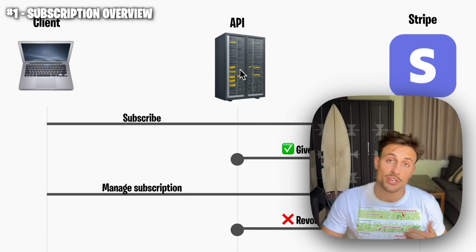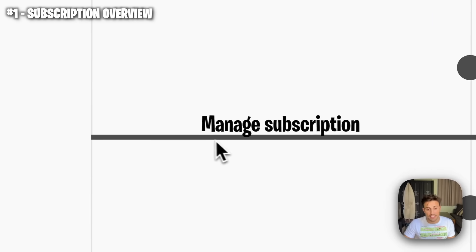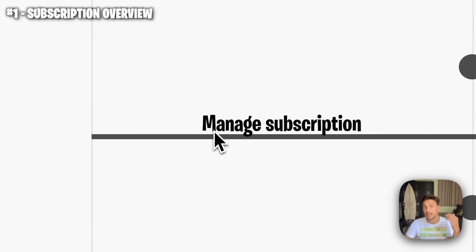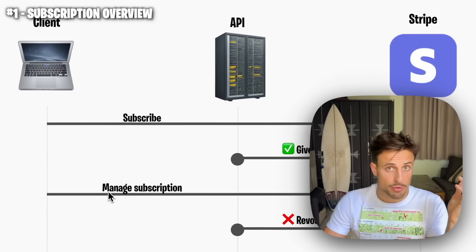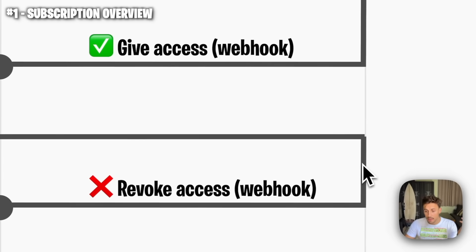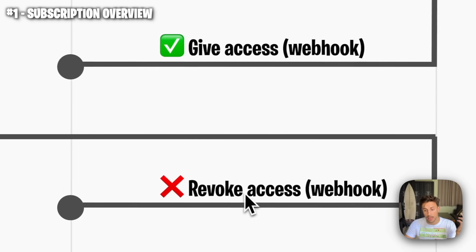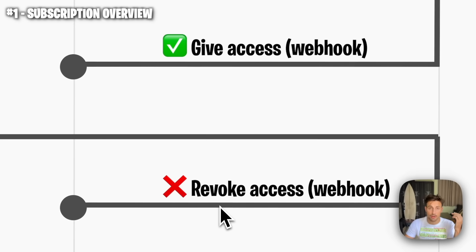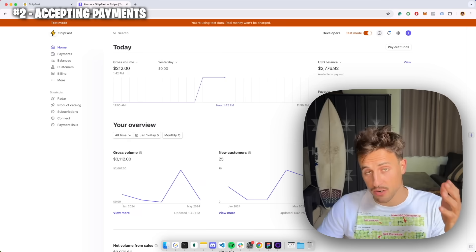Once the customer has access, they will be able to manage their subscription with the Stripe customer portal — so if they want to upgrade, download the invoice, or even cancel. Stripe will then update, and Stripe is going to let us know again through a webhook whether we should update the user in the database.